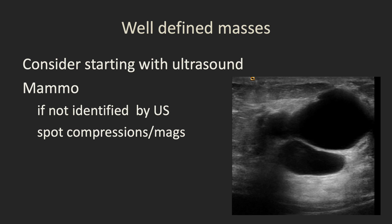With well-defined masses, we may want to start with ultrasound to reduce the amount of unnecessary mammographic imaging. If you see it's a cyst that conforms in every way with a mammogram, you can stop there, or if it's a very clear malignant mass. However, some places will start with mammography with spot compressions or magnification views, and we do sometimes revert to mammography if we cannot identify the mass by ultrasound — but in about 95% of patients we can identify the mass.